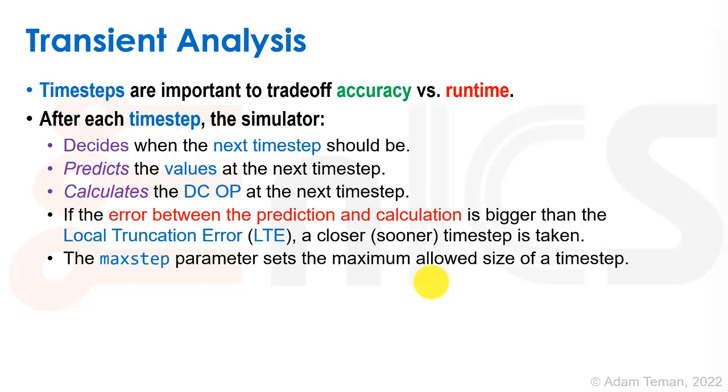We made this prediction and calculated what the convergence is. Then we take the error between the prediction and the calculation and compare it against what we call the LTE, the local truncation error. If we see that we didn't predict well, that means we should have probably used a closer time step because there was a huge change between two time steps. Therefore, we throw away that solution and choose a sooner time step. We converge at the new prediction and see what the local truncation error is.